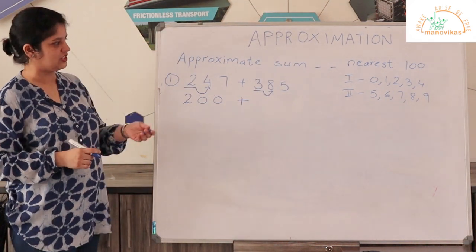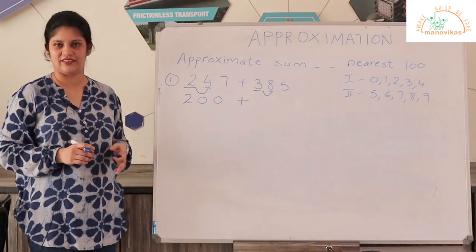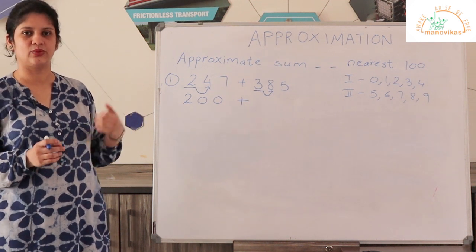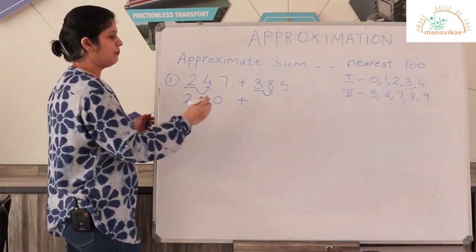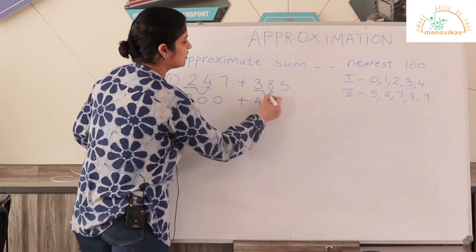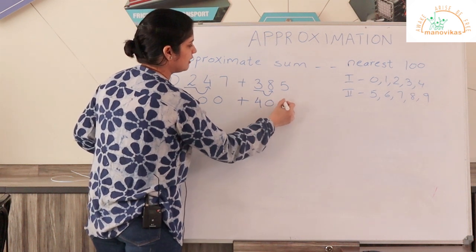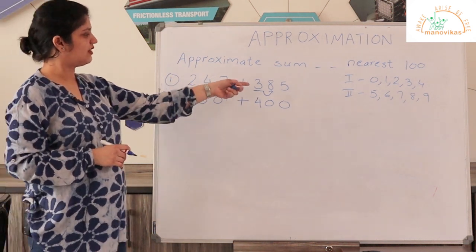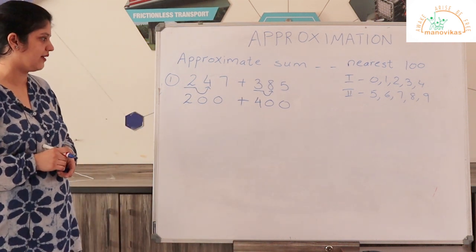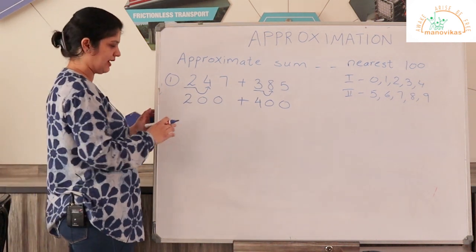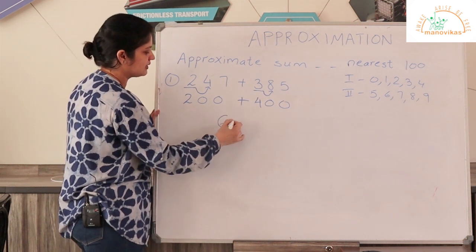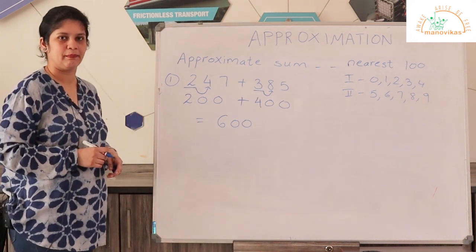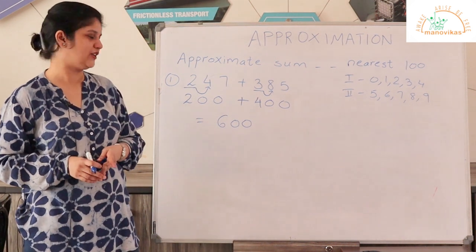In the second number, 385, the digit in the hundreds place is 3 and the digit after it is 8. Eight is in the second range, so the hundreds digit will change — 3 will be increased by one and become 4. So 385 rounded to the nearest hundred will be 400. Now 247 becomes 200 and 385 becomes 400. The addition is very easy: 2 plus 4 is 6, followed by zeros, giving 600. So addition becomes much simpler when you round to the nearest ten, hundred, or thousand.